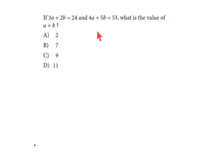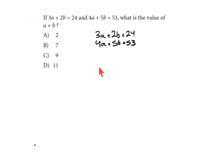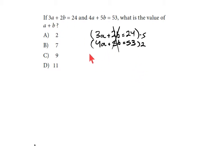Looking at the system they're giving us here: 3a plus 2b equals 24, and 4a plus 5b equals 53. It's not horrible, but doing the math could lead to some tricky arithmetic — you'd probably multiply the top by negative 5 and the bottom by positive 2 to make the b terms into 10s and cancel them out. But you'd be working with 24s and 53s, which isn't super convenient. That would be the elimination method.